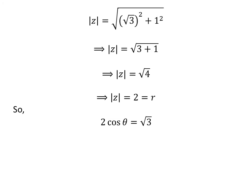Since r cos θ = √3, we have 2 cos θ = √3. Dividing by 2 gives cos θ = √3/2.